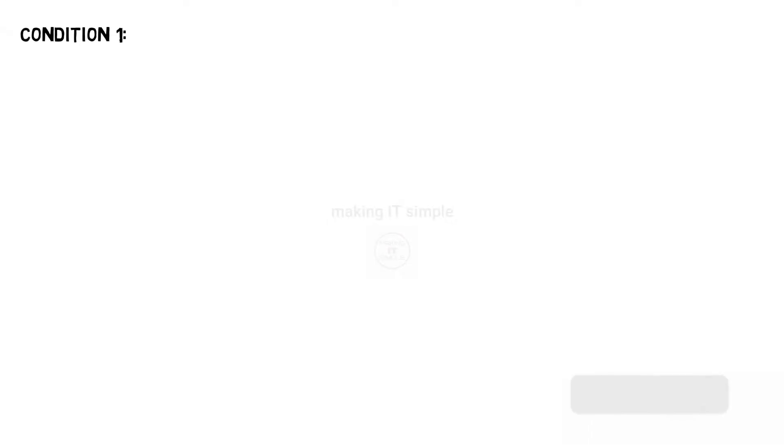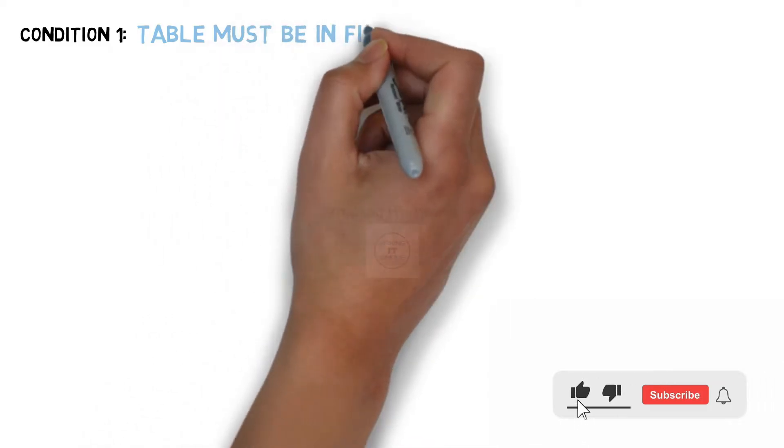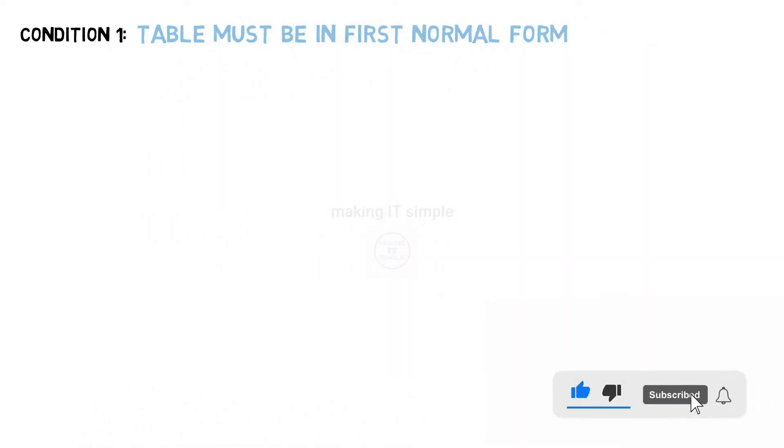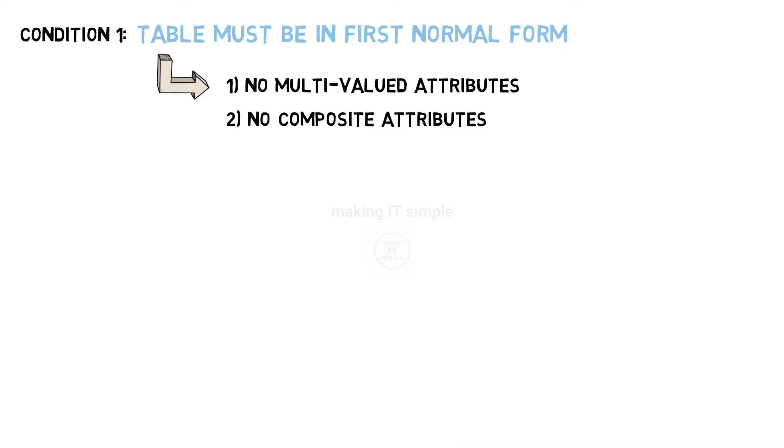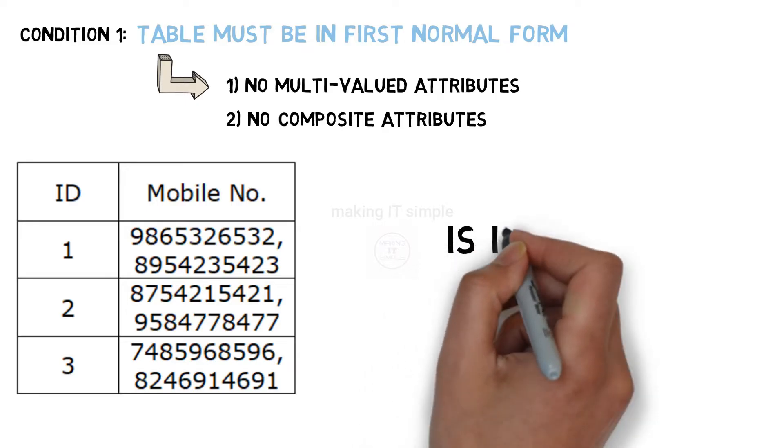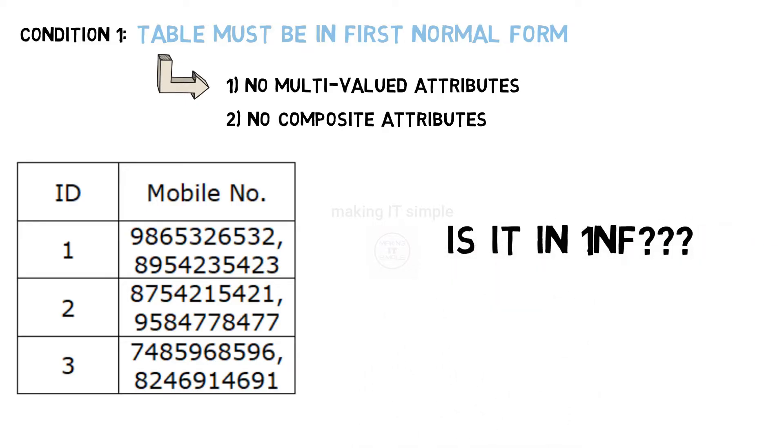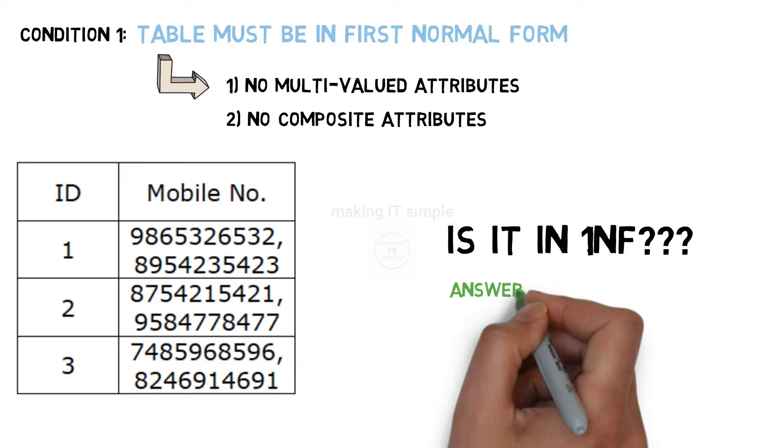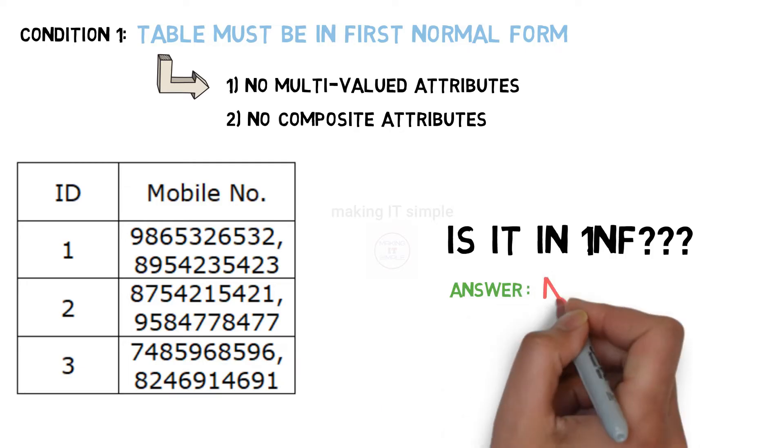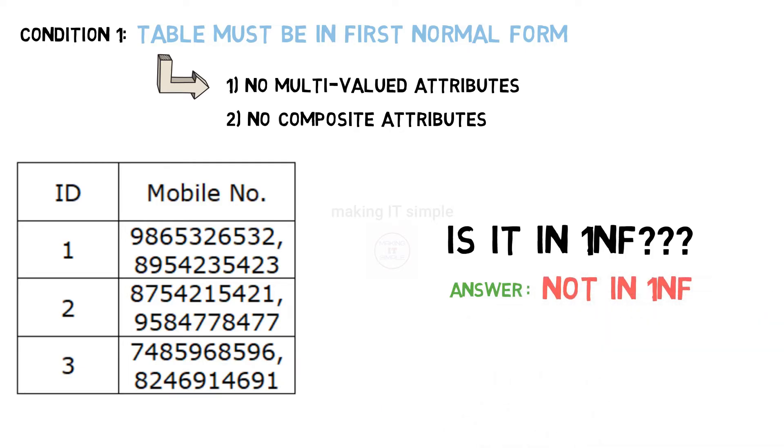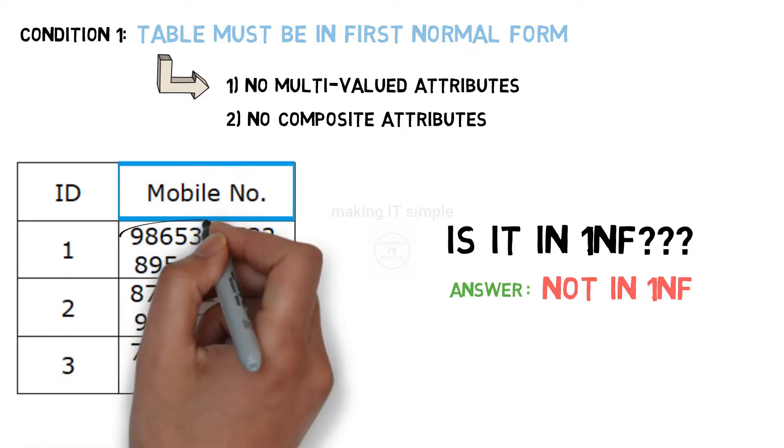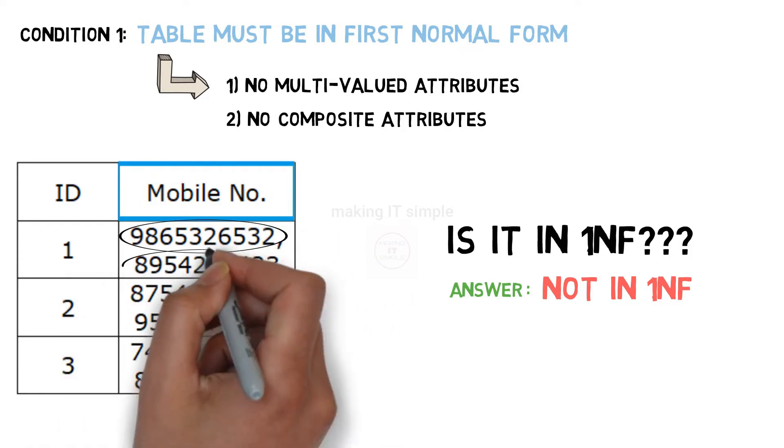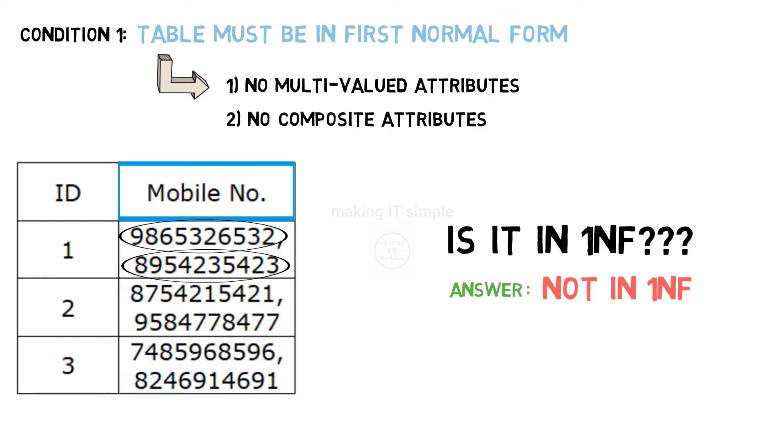First condition is table or relation must be in first normal form. There are two conditions for 1NF: No multivalued attributes and no composite attributes. So if I show you this table and ask whether it is in first normal form or 1NF, what will be the answer? Answer is it is not in 1NF because this attribute mobile number is multivalued. It has two values for each tuple. So it is not in 1NF.